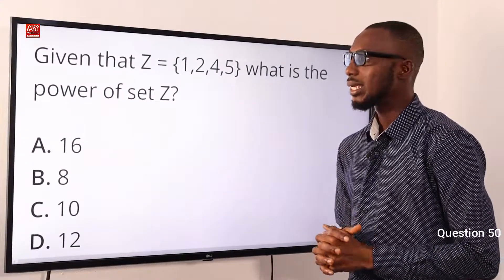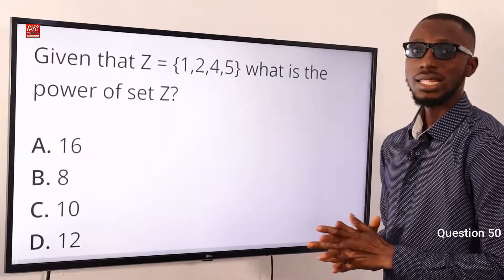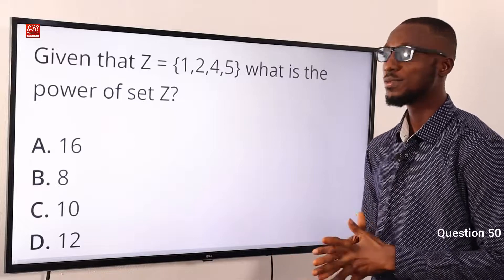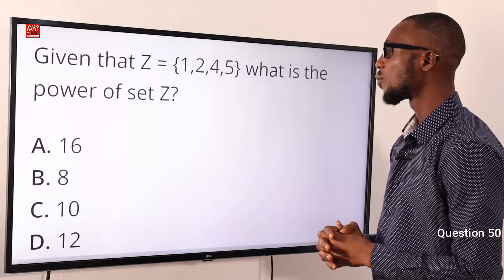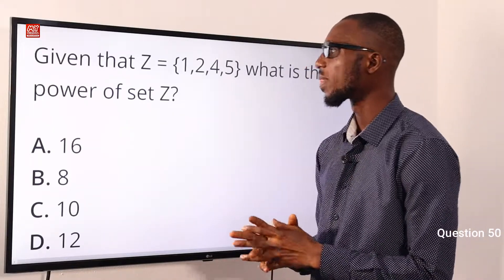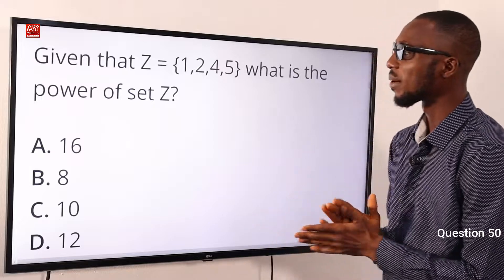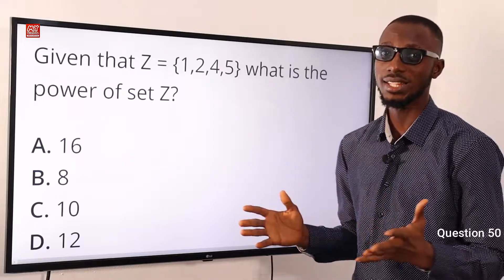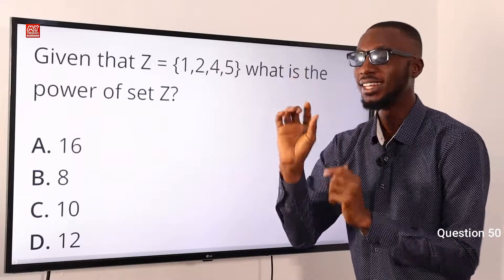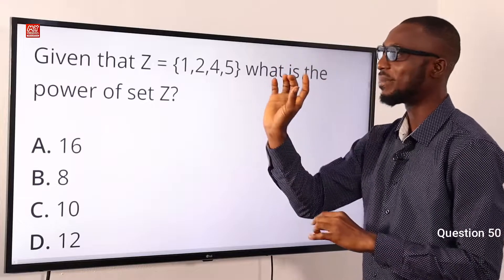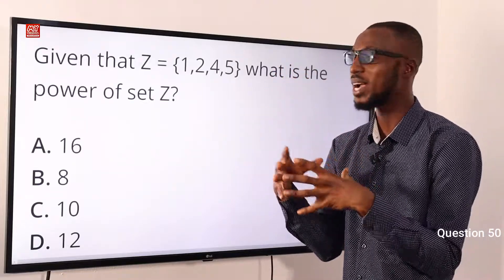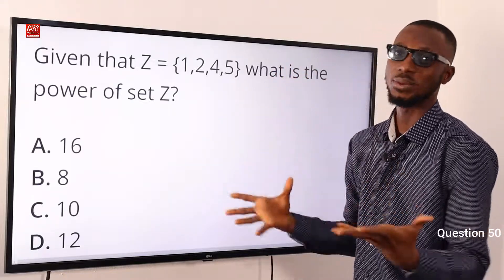Question 50. Given that Z equals the set {1, 2, 4, 5}, what is the power of set Z? When we talk about power of sets, the formula is 2 raised to power N, where N means the number of members or elements in that particular set.